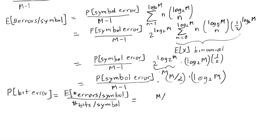I'm going to be left with M over 2 on top, M minus 1 on bottom, multiplied by the probability of symbol error. So we get this strange looking relationship that the probability of bit error is equal to M divided by 2 over M minus 1 times the probability of symbol error. And this is an exact result.